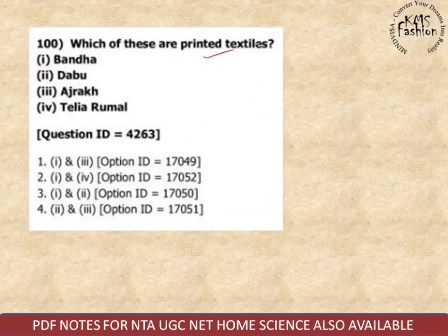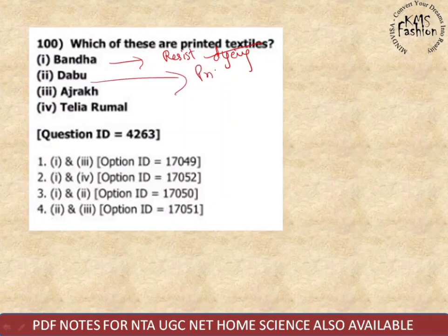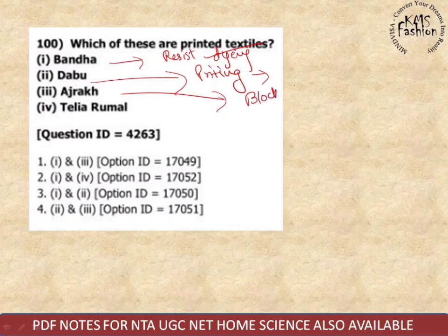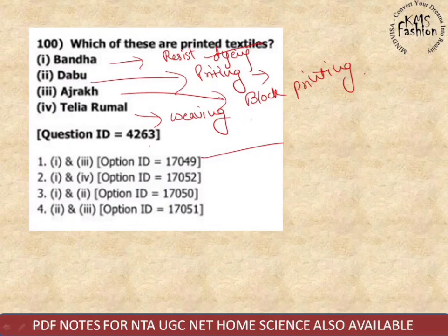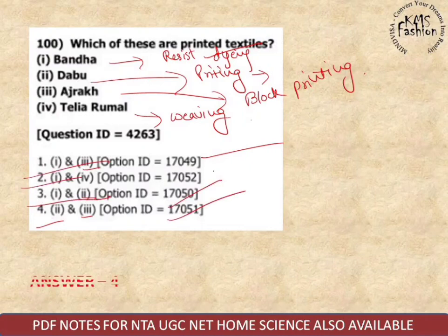Last question: which of these are printed textiles? Bandha is a resist dyeing technique, not printing. Dabu printing is a printed technique. Ajrak is also a block printing technique. The fourth option involves weaving. So second and third are correct — the answer is option four (both second and third qualify as printed textiles, eliminate others).